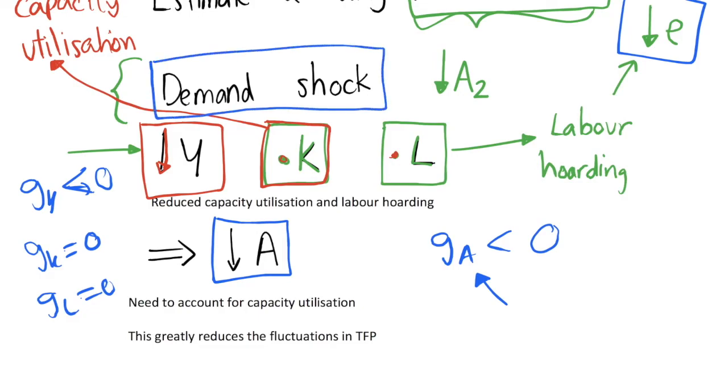So this is a big issue with the Solow residual in its current form as we've written it down, because it is currently capturing lots of demand aspects of the economy from demand shocks. When we think about the TFP or the technology parameter, we tend to want to be thinking of supply shocks and shocks to the way things are done on the supply side. We don't really want this to be taking into account our demand shocks—that's a completely different side of the economy. And in the Solow model the demand side of the economy is just completely determined by our constant savings rate.